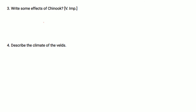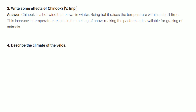Write some effects of Chinook. Chinook is a hot wind that blows in winter. Being hot, it raises the temperature within a very short time. This increase in temperature results in melting of snow, making pasture lands available for grazing of animals.